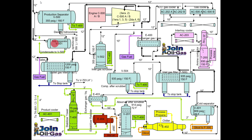Below this you can see there is a test separator. As the name suggests, this separator is used to test a specific well. For example, if you want to know the production of a specific well, we will line up the flow from that well to this test separator, test it for one day, record all the parameters and readings, and see how much the well is producing. All the fluids from this separator are then sent back to the production separator.